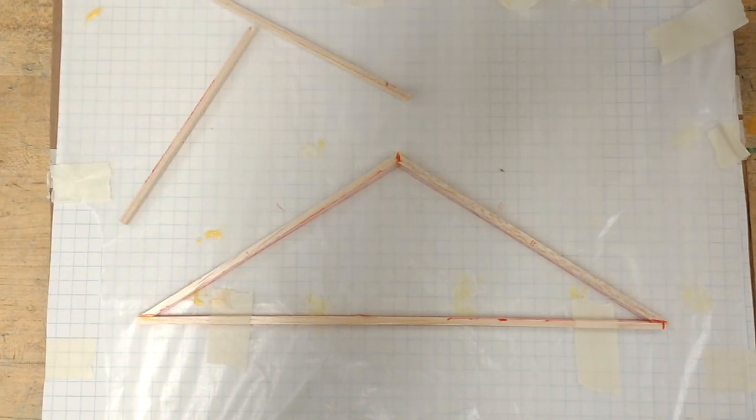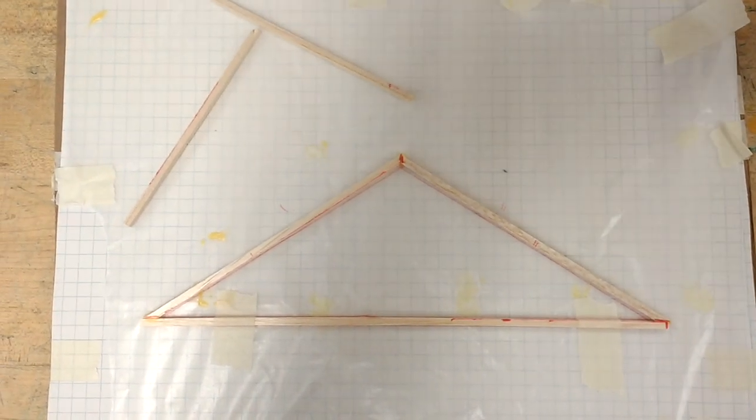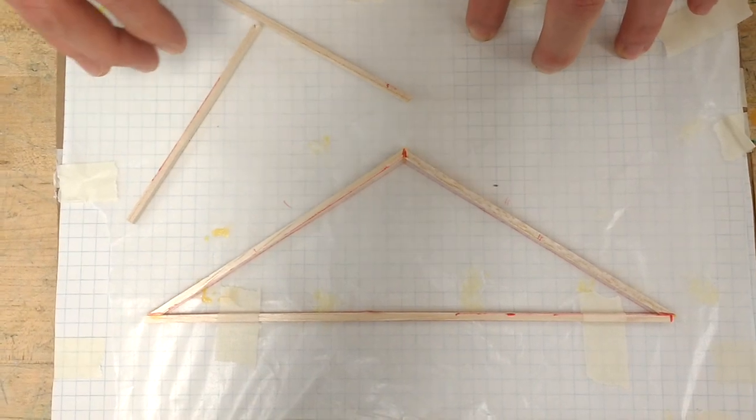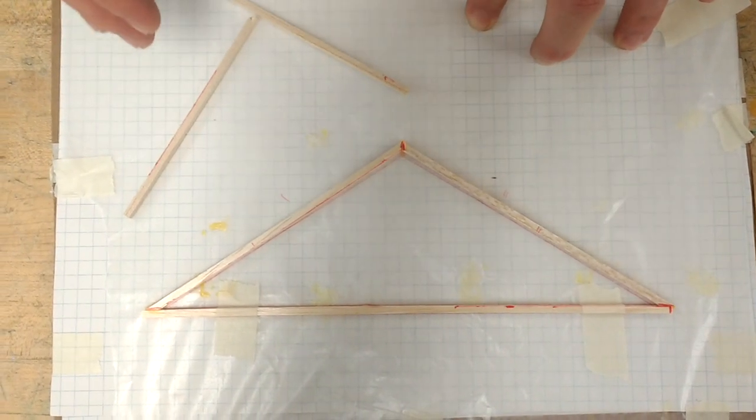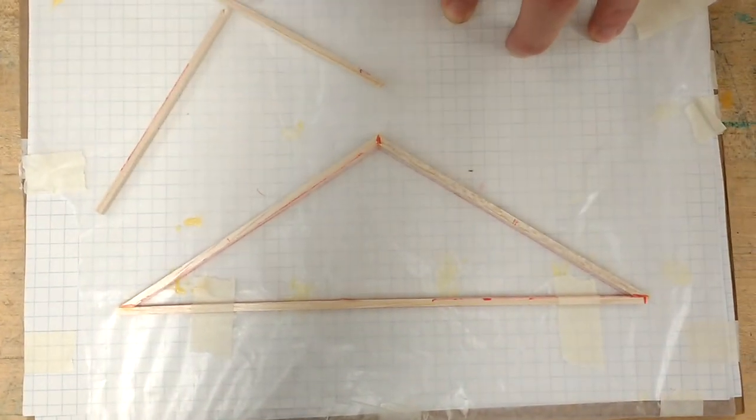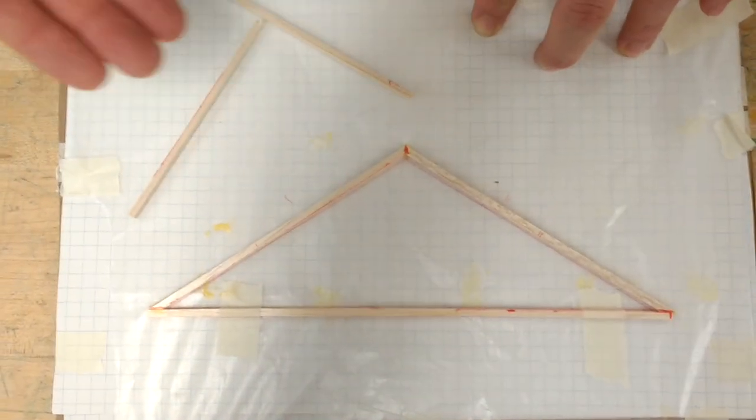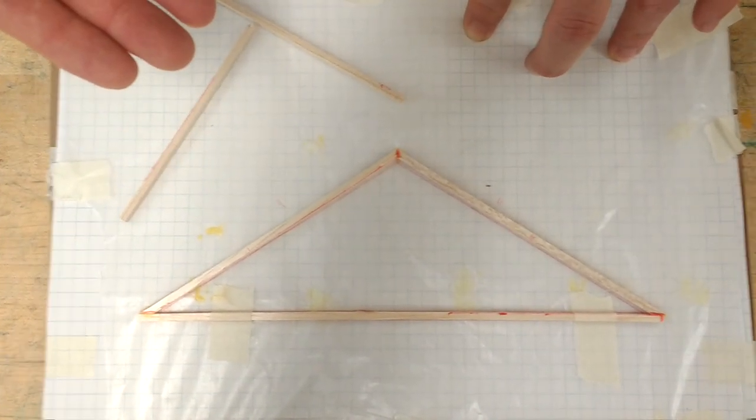I wanted to give you a couple of pointers on how to actually glue and tape these things to the wax paper so that it's easy to get it back off and you don't break it when you're trying to remove it. That way you actually have something to test and you're not waiting another day for the wood glue to dry.